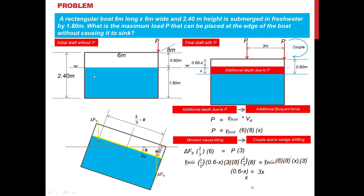Manipulating the equation and solving for X: X equals 0.15 meters. Knowing X, we substitute directly into the equation: P equals 9.81 times 6 times 8 times 0.15, yielding a force of 70.632 kilonewtons. This is the required force to sink the rectangular boat with P placed on the edge. Converting: 70.63 × 1000 ÷ 9.81 gives approximately 7,200 kilograms.